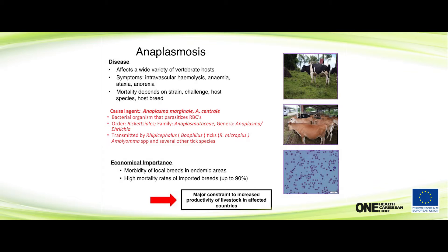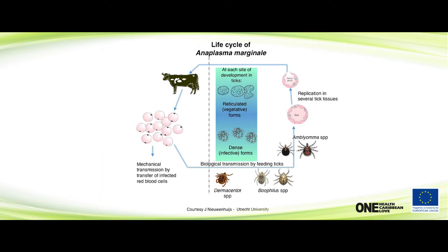Looking briefly at the life cycle — it's pretty simple. The organism replicates in the tick, forming dense infected bodies, and is then transmitted to cattle via mechanical transmission. Mechanical transmission of both Babesia and Anaplasma can also occur, involving just a transfer of infected blood cells that continues the cycle.